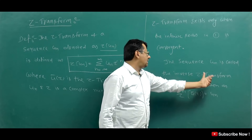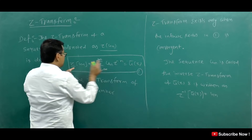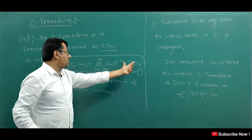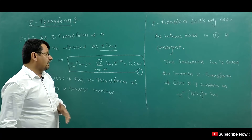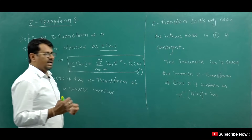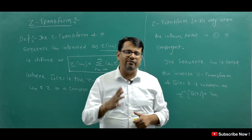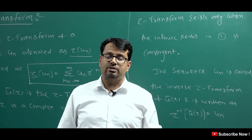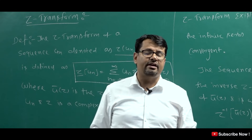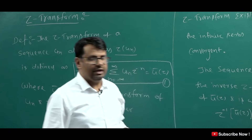The sequence u(n) is called the inverse Z-Transform of U-bar(Z). I will explain the inverse Z-Transform in detail later. Now let's take a question to understand how we derive Z-Transforms. This is a very easy topic and will be easy to understand. Note that in GATE exam or CSIR NET, Z-Transform is not heavily tested, but GATE has the best questions for Electronics or Electrical branch.